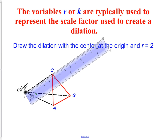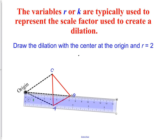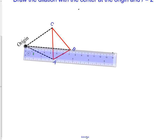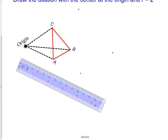With scale factor 2, everything gets twice as far from the origin. We put a ruler on our picture: the measurement from the origin to point C is 5 centimeters, so from the origin to C-prime it will be 10 centimeters. For point B, the distance is 7 centimeters, so B-prime is at 14 centimeters. For point A, originally about 4.8 centimeters, the new point is at 9.6 centimeters.